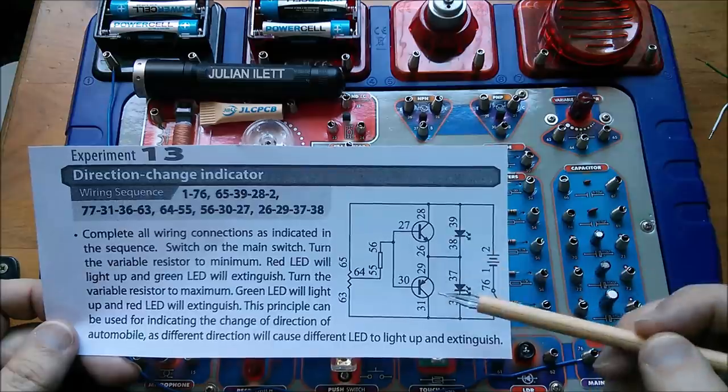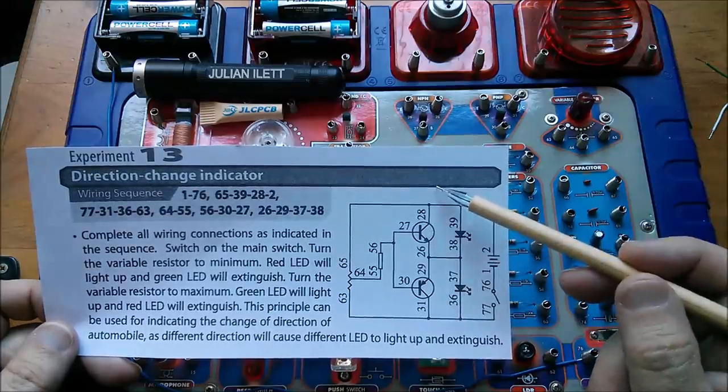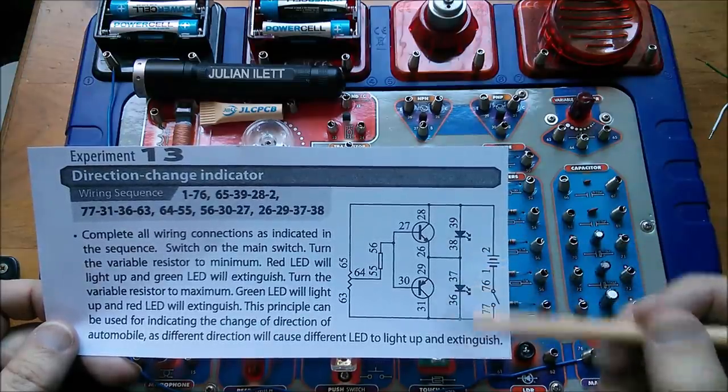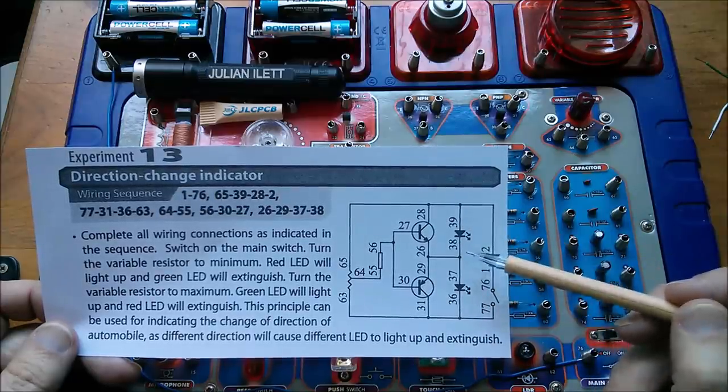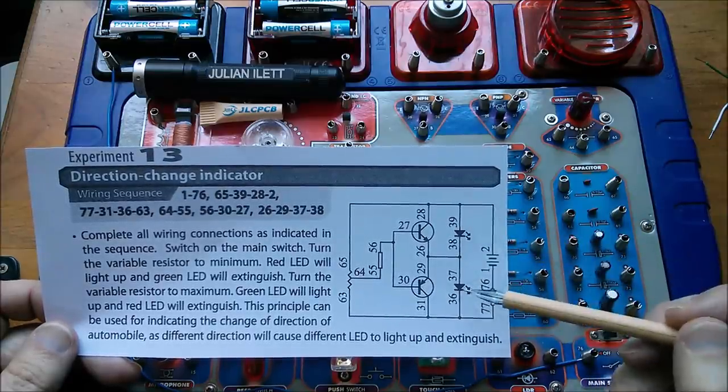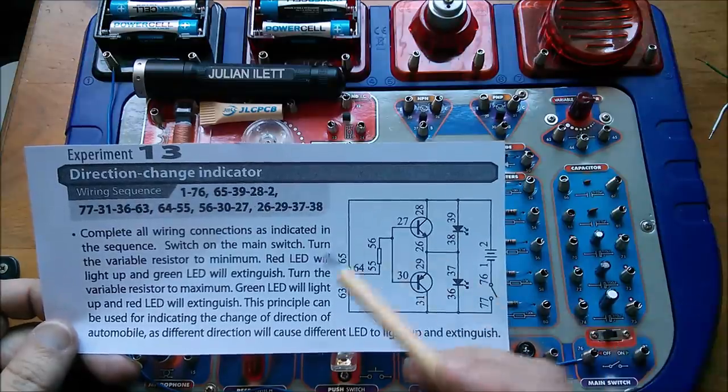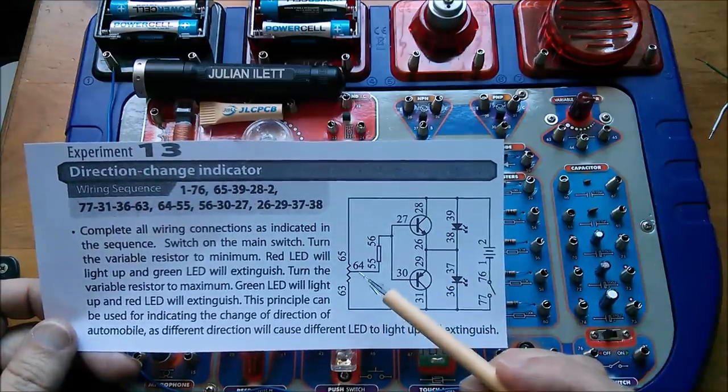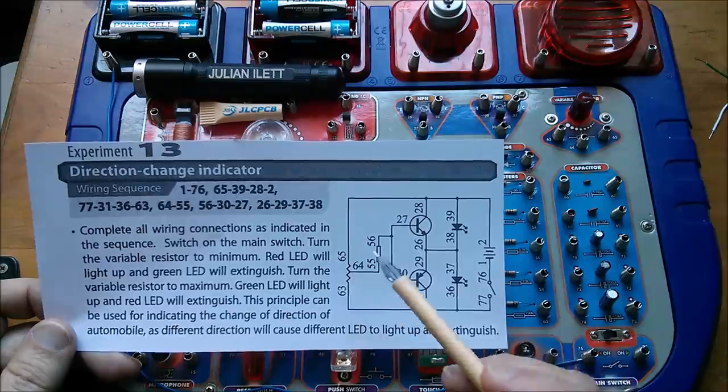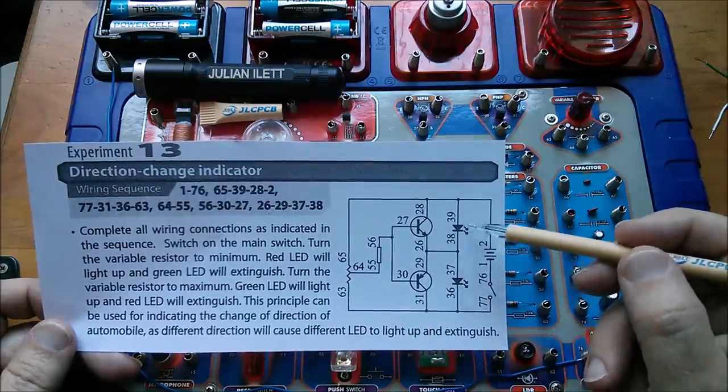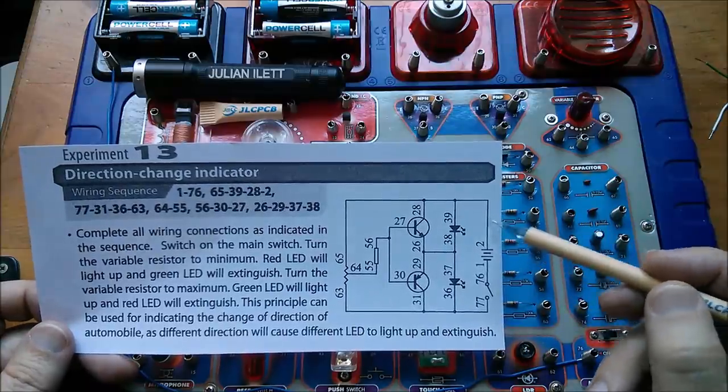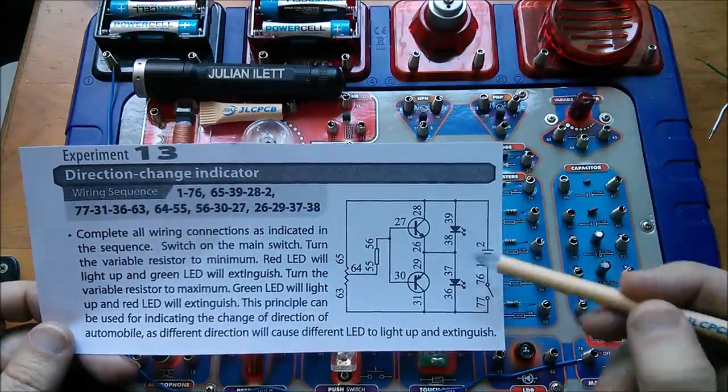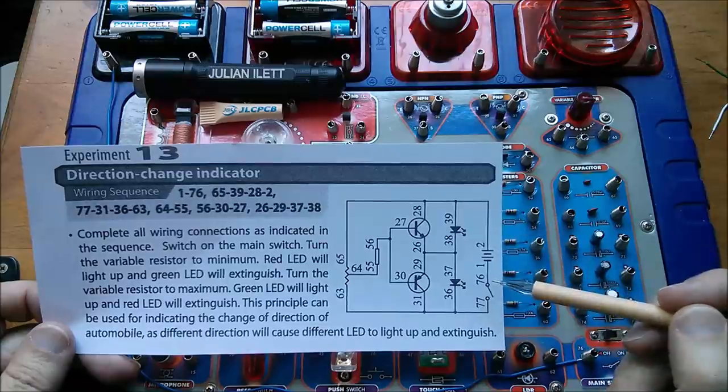And then we've got two transistors: an NPN which is actually on the high side and a PNP which is on the low side, effectively shorting out each LED in turn. I presume by adjusting this pot, which hasn't been drawn very well, you can make it quench one LED and then quench the other one.